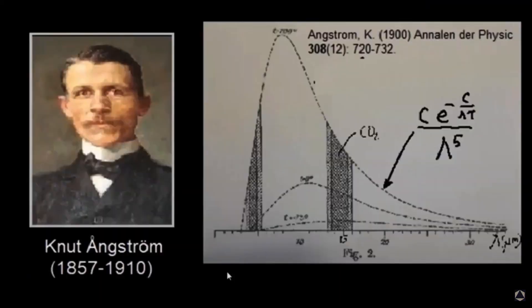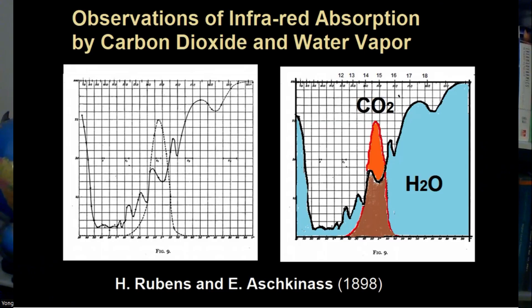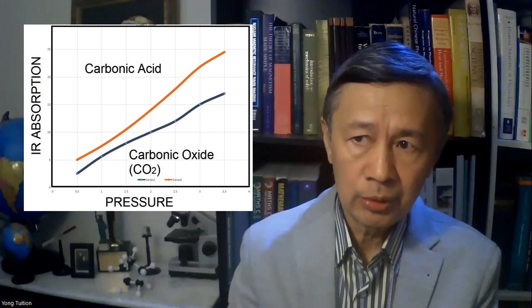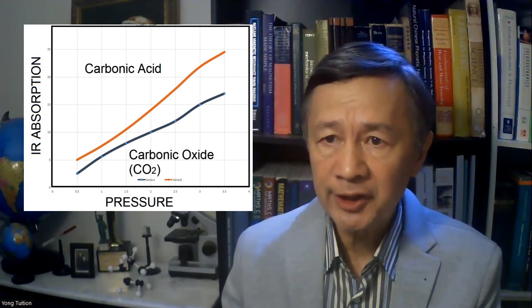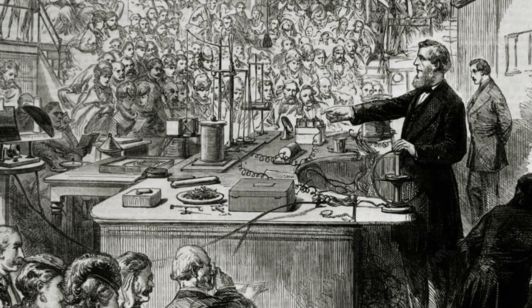Arrhenius' prediction was immediately rebuffed by Cleo Armstrong, according to whom the proportion of CO2 in absorbing the terrestrial infrared radiation should be less than 16%. At the time he published his work, the characteristic CO2 absorption band at wavelength 15 microns was unknown. Besides, he didn't differentiate carbonic oxide (CO2) from carbonic acid, whose infrared absorptivities were noticeably different, as observed by John Tyndall.